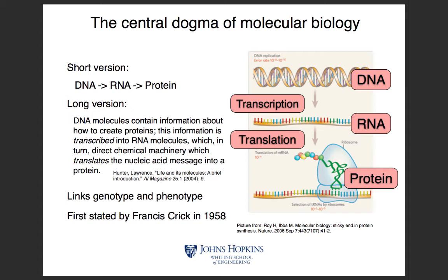We're going to start with a bit of basic biology to motivate why we want to sequence genomes. The central idea is that we want to understand the information encoded in genomes and how that gives rise to different phenotypes — the observable characteristics of individuals. We've known since the 20th century that DNA is the storage of information within the cell, and that information gets transcribed into various levels of different molecules. Central Dogma says DNA gets transcribed into RNA, which encodes protein sequences that get translated into amino acid sequences that fold and carry out their biochemical function.